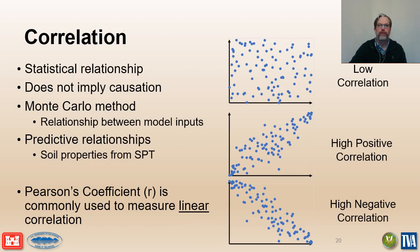Correlation describes the statistical relationship between two variables, but does not necessarily mean there is a direct cause and effect relationship. It can be used in a Monte Carlo analysis to model relationships between input variables and is also commonly used to make predictions about the value of a parameter based on the value of some other parameter. Pearson's coefficient is commonly used to measure linear correlation. A low correlation implies randomness, a positive correlation implies that parameters tend to move in lockstep, and a negative correlation implies that a low value for A corresponds to a high value for B.